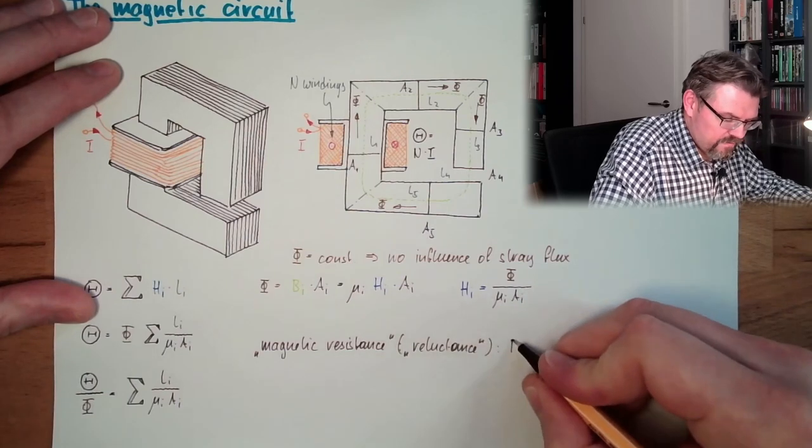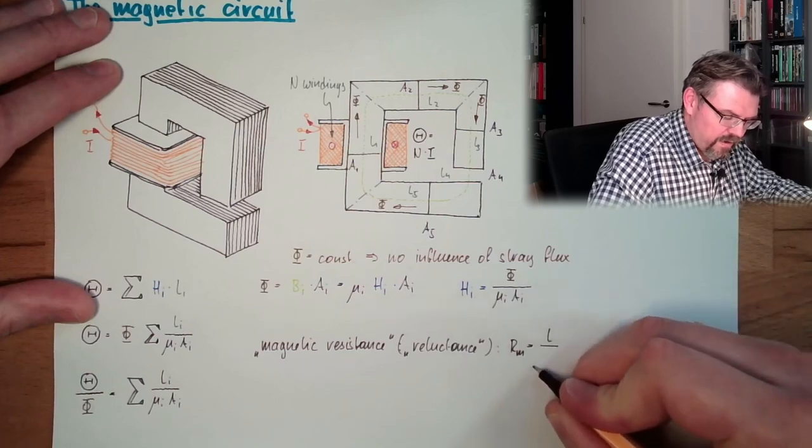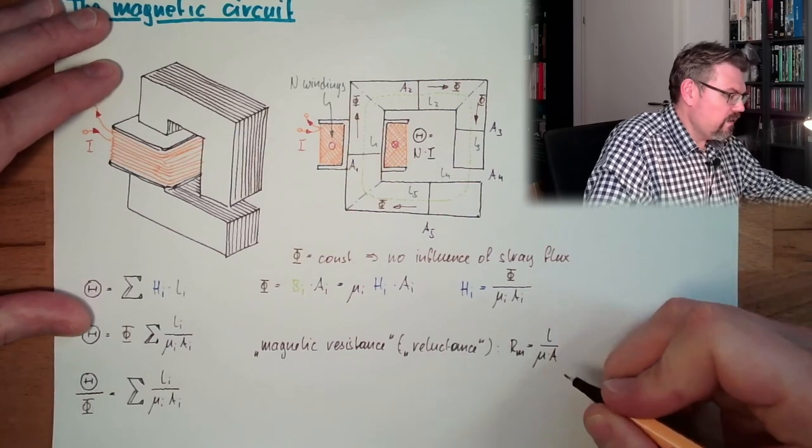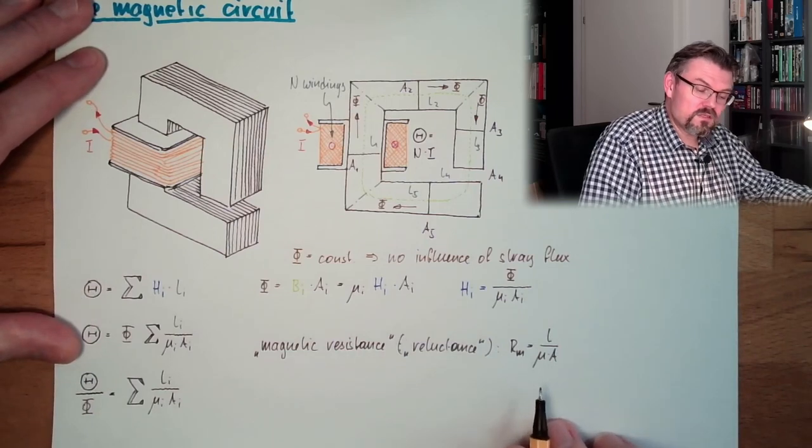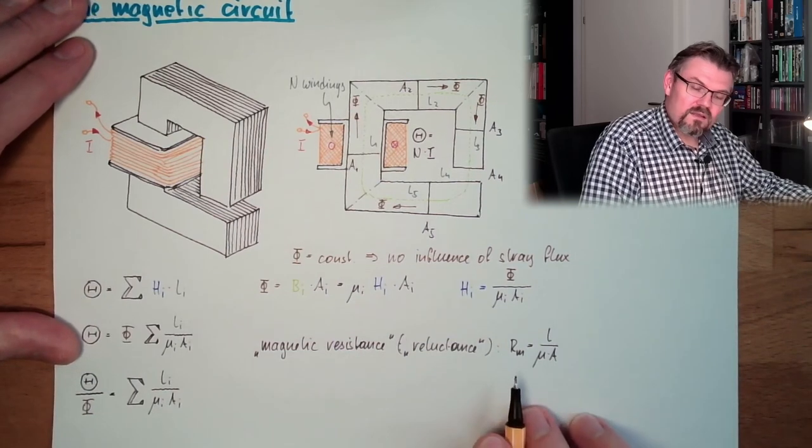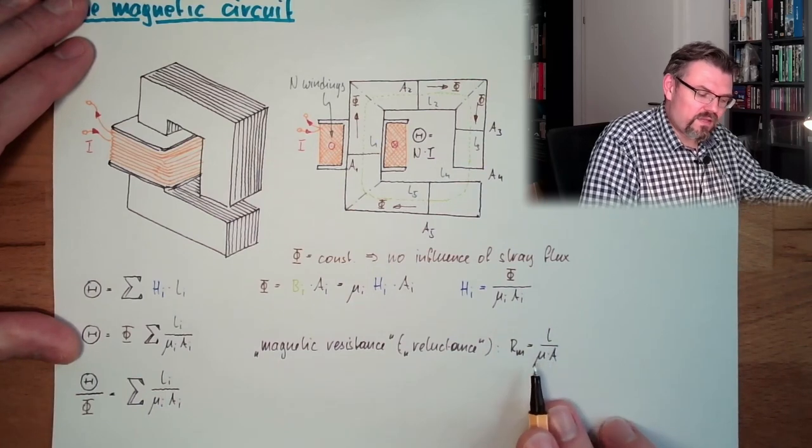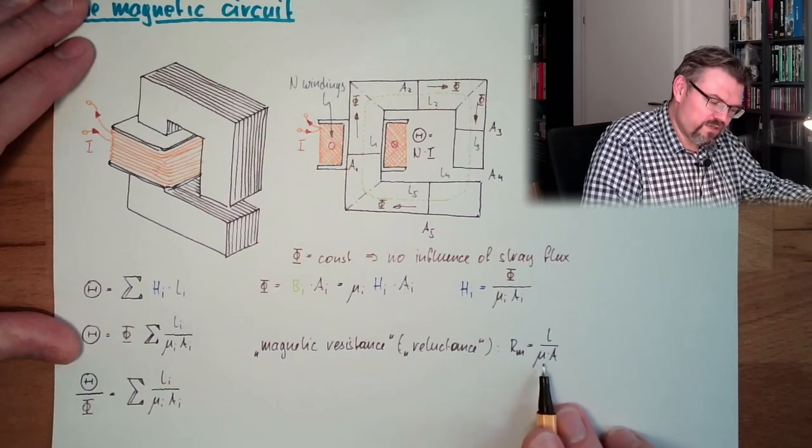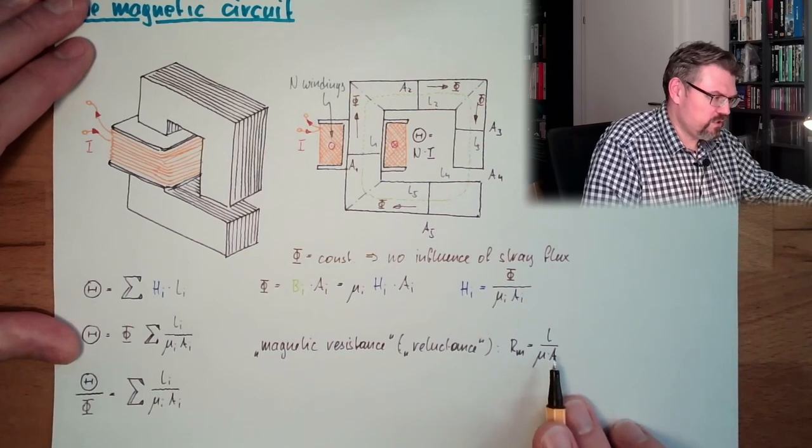Or sometimes called reluctance. And this magnetic resistance equals L divided by mu dot A. Please remember what was the electrical resistance? It was also L divided by A, but then we had some rho. This is a material-specific constant. This looks pretty much the same.